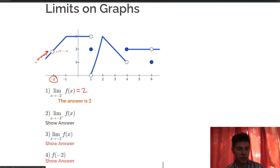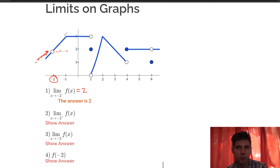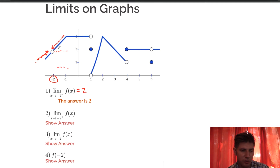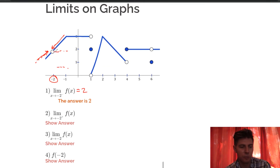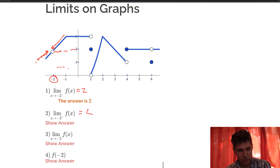Number 2 says what is the limit as we approach negative 2 from the right. Negative 2 from the right means going in this direction for x, which means we ride along this line here. What is the y value we're approaching when we approach x equals negative 2 from the right? That y value is also 2, so the answer to this one is also 2.